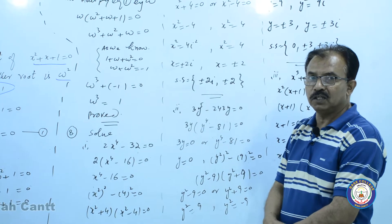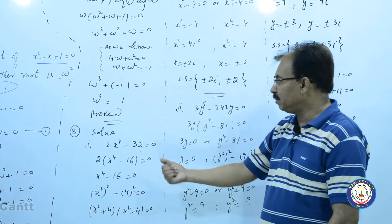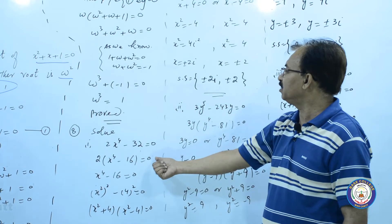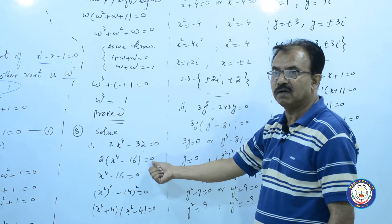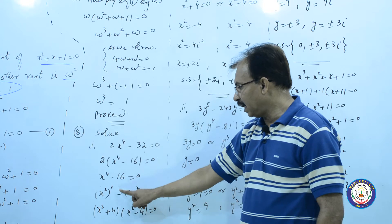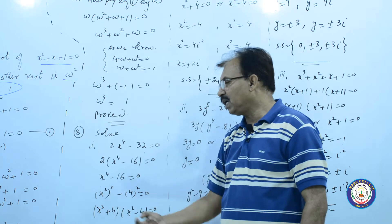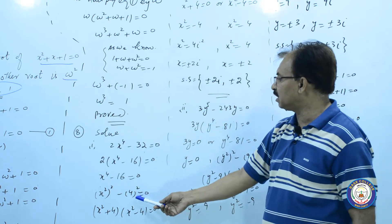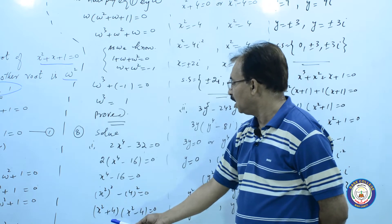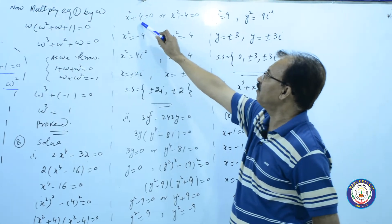پہلا question اس کو ہم نے solve کرنا ہے۔ factorize کا سب سے پہلا method taking common ہوتا ہے جو آپ نے نویں میں بھی پڑھا ہے۔ اس میں two ہمارا common آ گیا۔ two کو جب دونوں sides divide کریں گے تو zero کے ساتھ zero ہو جائے گا۔ باقی یہ form رہ گئی۔ اب اس میں x square کا square اور negative four کا square، یہ a square minus b square کی form بن گئی۔ factorize ہو کے a plus b اور a minus b بنے گی۔